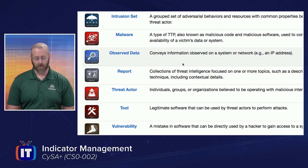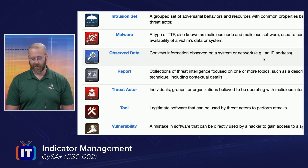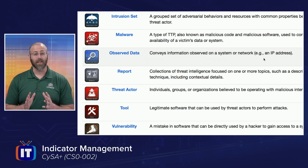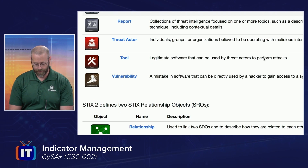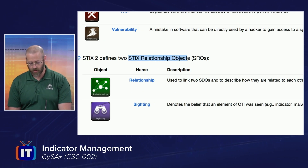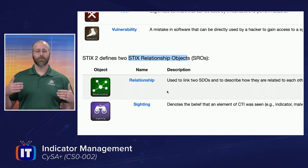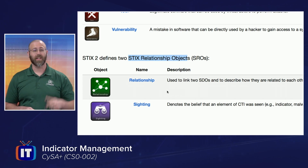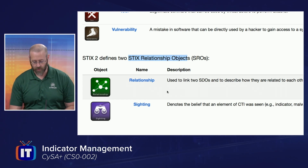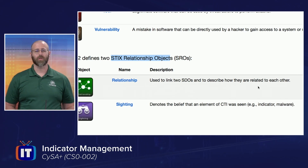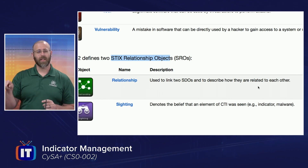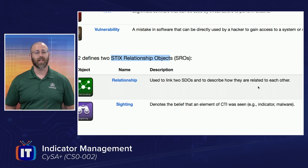Observed data conveys information observed on a system or network - like an IP address. It's just grabbing all those little pieces of data, trying to give them a category and formatting them in a usable way. The STIX Relational Objects - SROs - are used to link two SDOs and describe how they are related to each other. So we're always looking for a relationship, some sort of connection. That might be this APT group, helping you start to get a better picture, all going toward doing a better job of defending our networks.